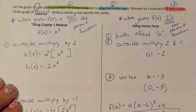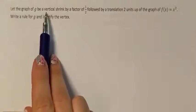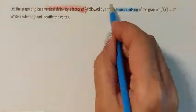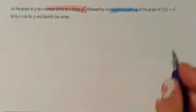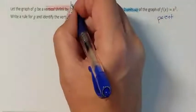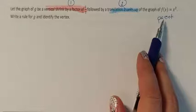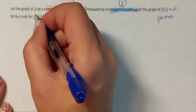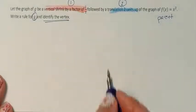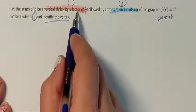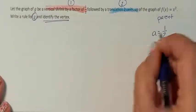Let's do practice problems together. First problem: let the graph of g be a vertical shrink by a half, followed by a translation two units up of the parent function. Since it's the parent function, we can use our Chapter 2 skills. We have two changes: a vertical shrink and a translation up, and the problem asks us to identify the vertex.